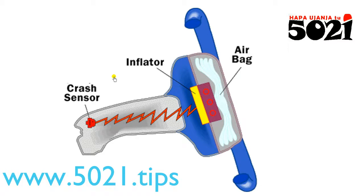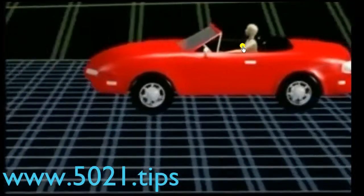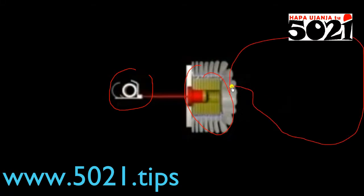This is the best setup of the system — there is a crash sensor, then it goes to the inflator. Let's look at how these sensors work. Imagine you are driving, and by mistake or whatever happens, the car hits something. Then the airbag comes out — let's look at how it comes out.